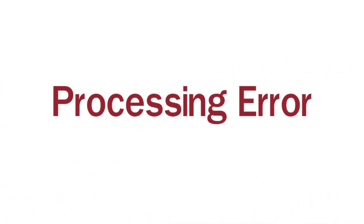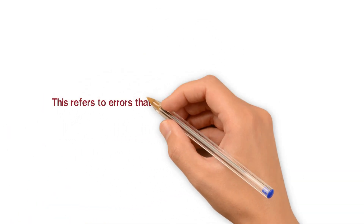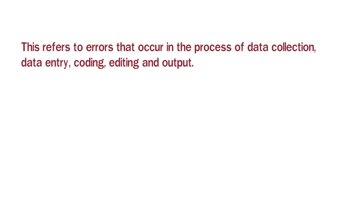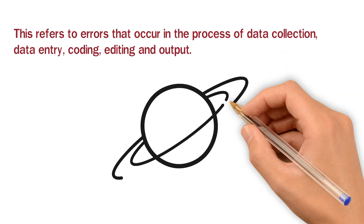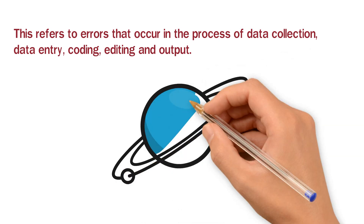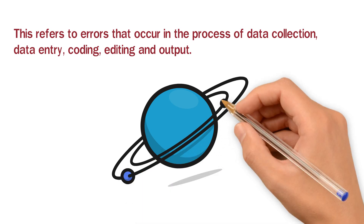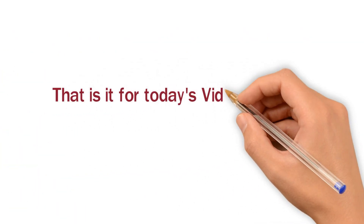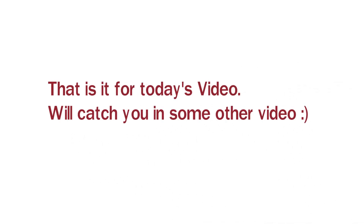Last, we have processing error. This refers to errors that occur in the process of data collection, data entry, coding, editing, and output. That means if we have some kind of error in data collection, data entry, editing, or output, then we call it a processing error. So we have described what sampling errors and non-sampling errors are. This is it for today's video. We'll catch you in some other video.